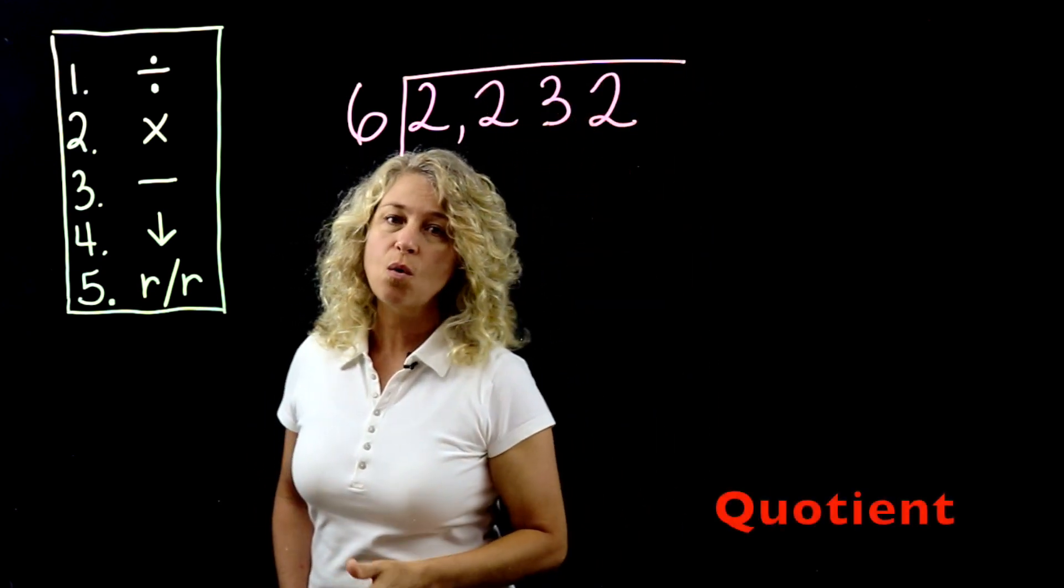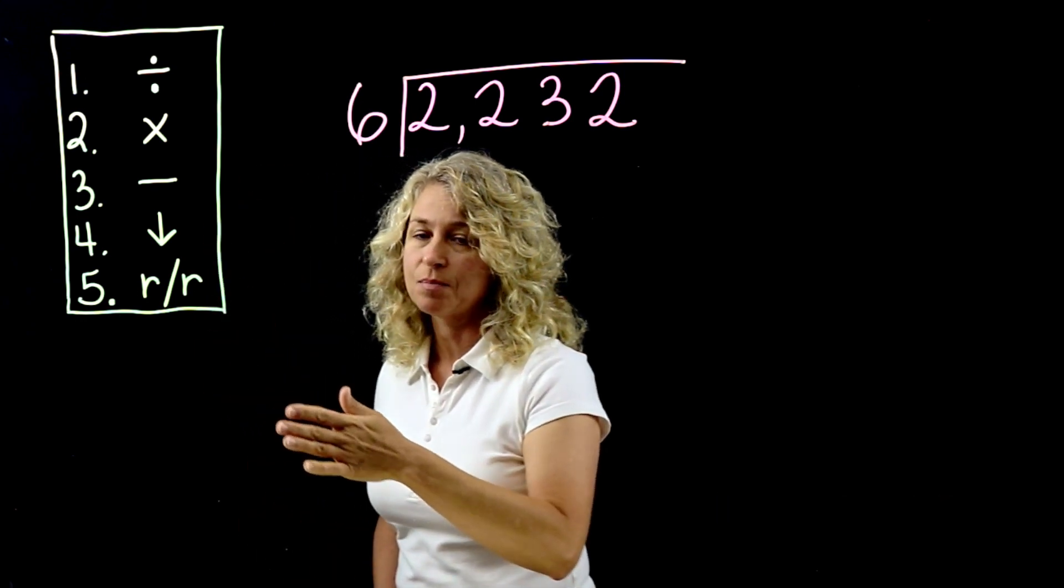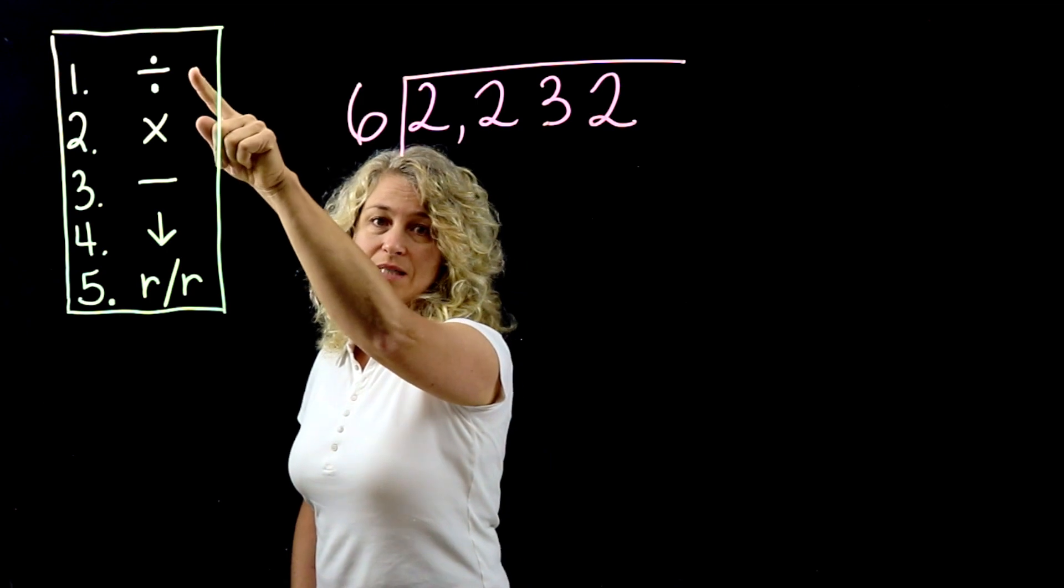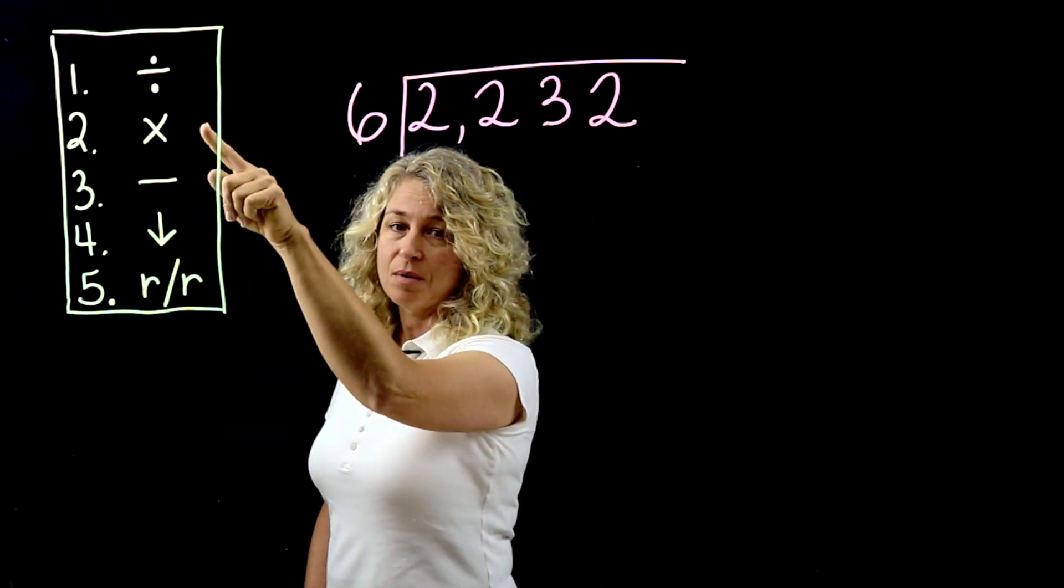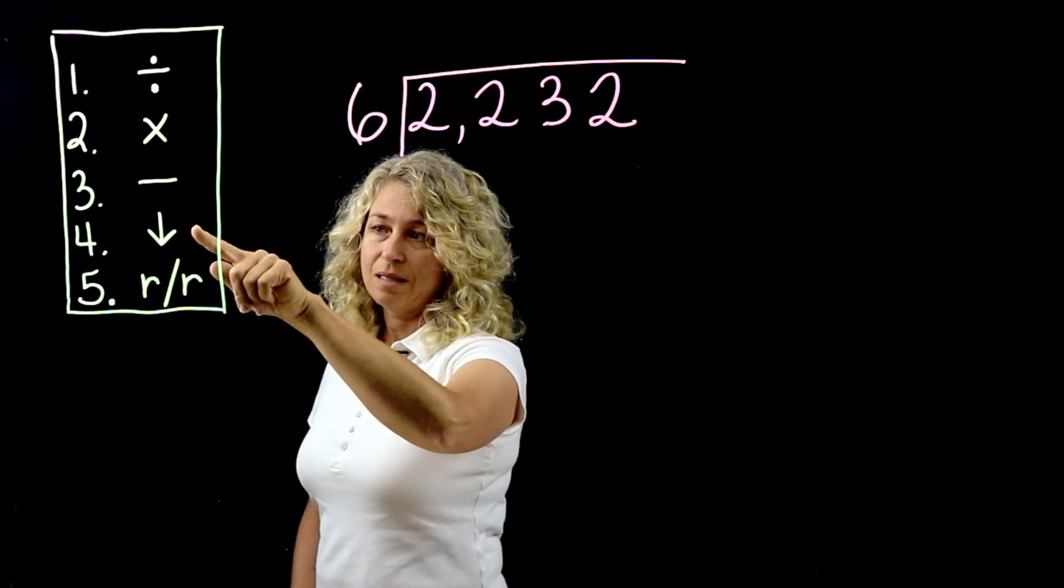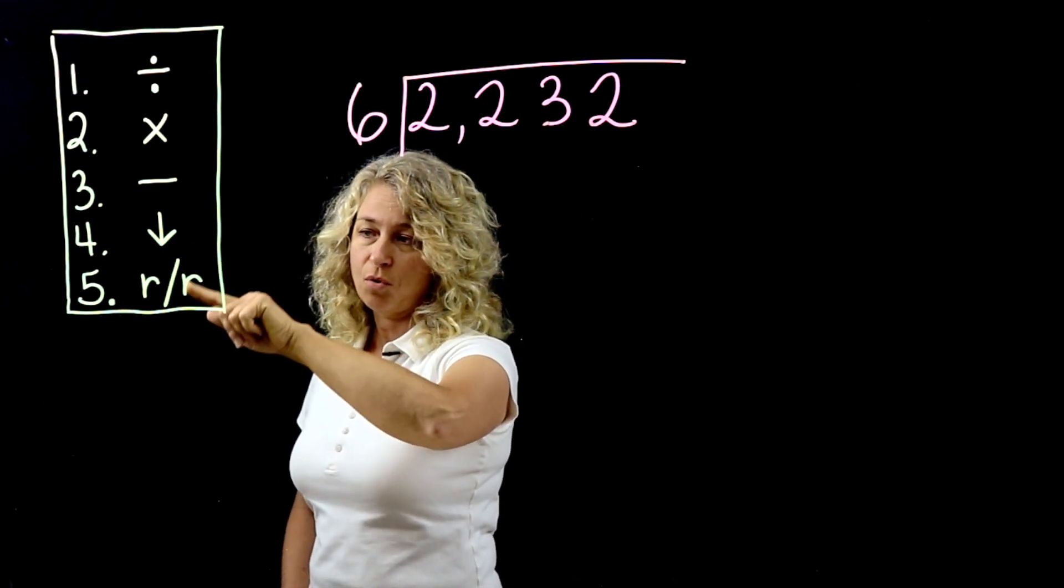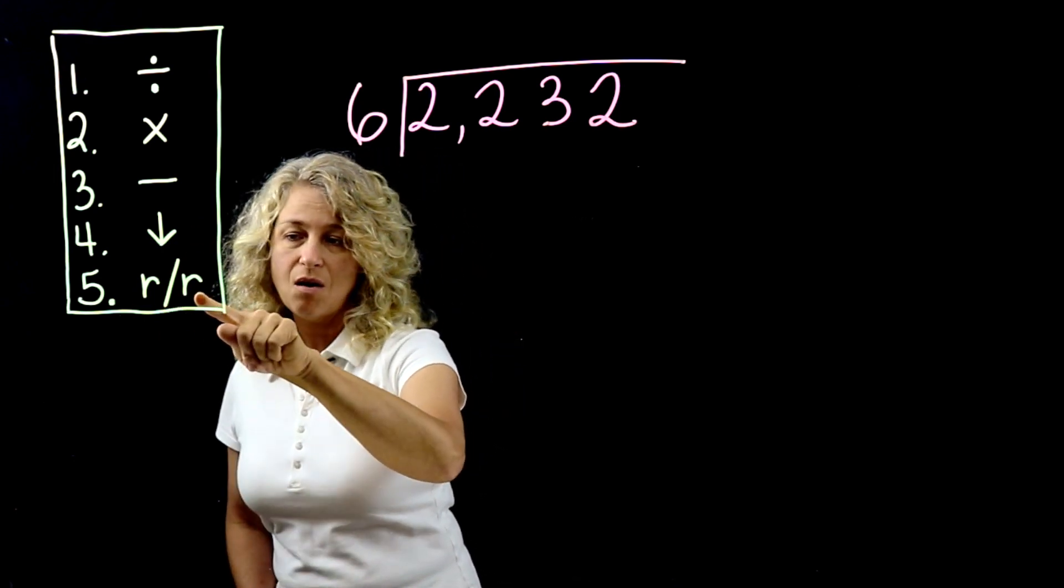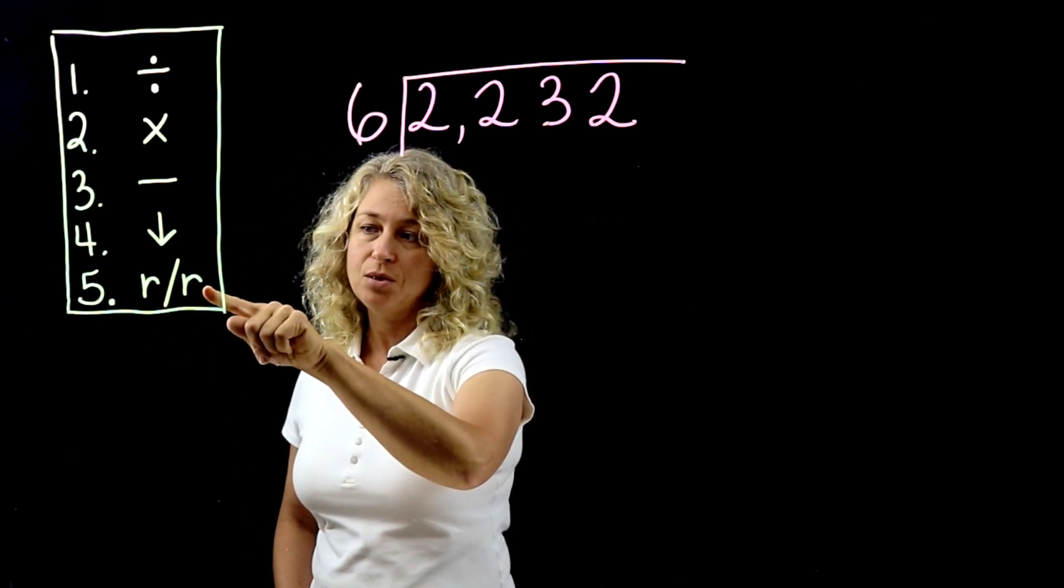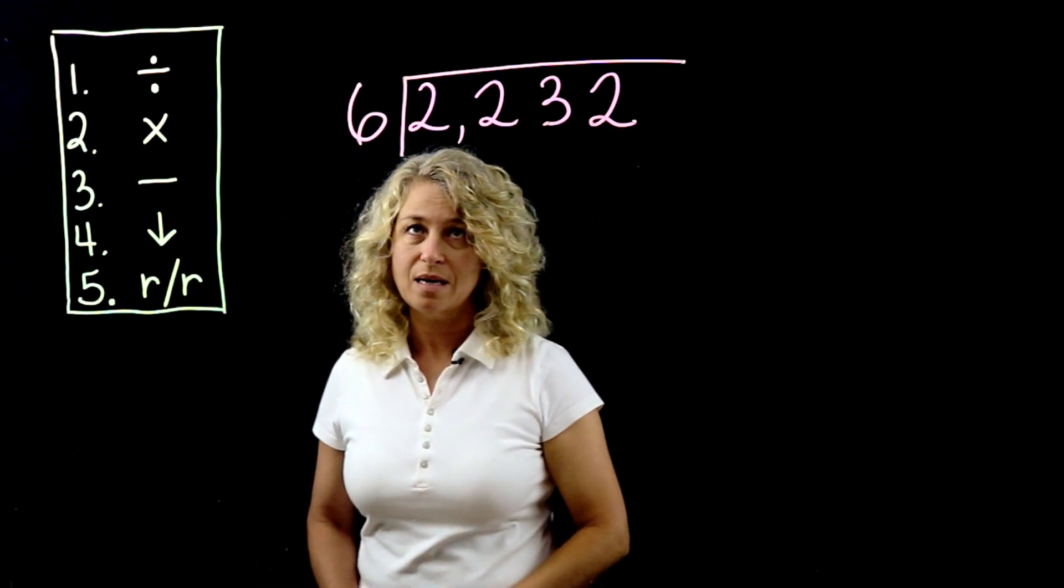All right, so we're going to learn these five steps in order to do long division. The first step will be divide, the second step multiply, then the third step subtract. Bring down will be our fourth step, and then the R/R is going to stand for repeat or remainder, and I will explain that when we get to that step.